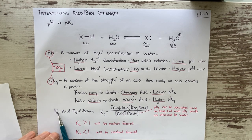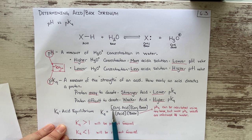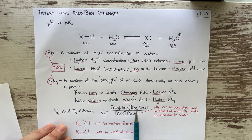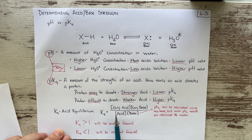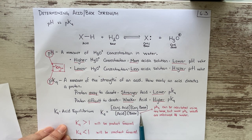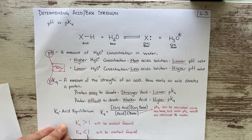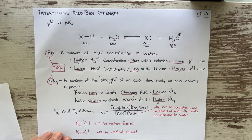If the acid is strong, the conjugate products will be more abundant than the reactants, so Ka will be greater than one — product-favored. If the acid is weak and not very reactive, the reactant concentrations will be higher than the conjugate concentrations, so Ka will be less than one — reactant-favored. It's important to note that Ka cannot be a negative value; it can either be greater than one or between zero and one.